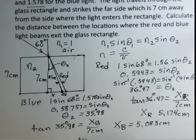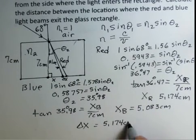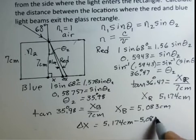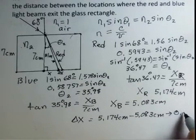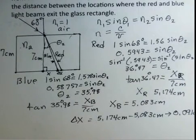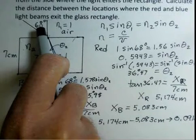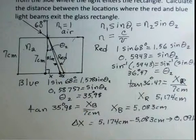Delta X, I just need to subtract these two numbers. 5.174 centimeters minus 5.083 centimeters. And when you do that subtraction, you find 0.091 centimeters. So about one millimeter apart. If you create this situation in a laboratory, if you can get 68 degrees between the angle of the incoming ray and the normal, if you have a block of glass where these indices of refraction are the correct values, then your two beams are going to be about a millimeter apart from each other, 0.1 centimeters. Rough calculation. That's the delta X.